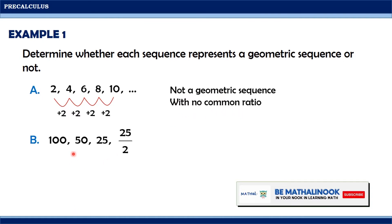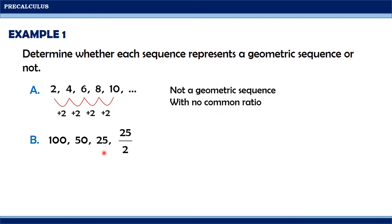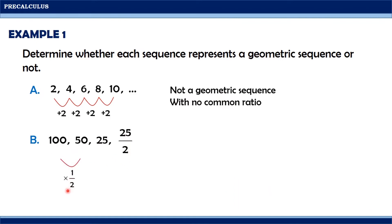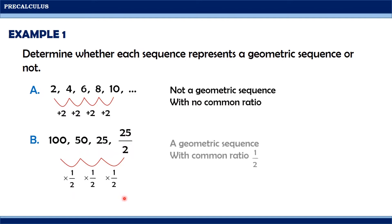For the second one, we have 100, 50, 25, and 25 over 2. From 100 going to 50, we have multiplied by 1 half. From 50 going to 25, we also multiplied by 1 half. And from 25 going to 25 over 2, we multiplied by 1 half. Therefore, this sequence is a geometric sequence with common ratio equal to 1 half.